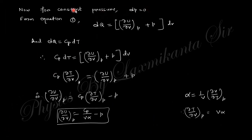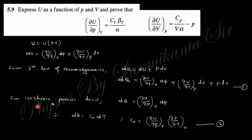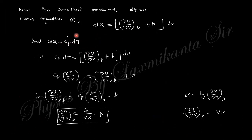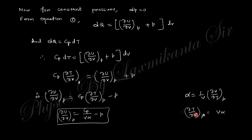For a constant-pressure (isobaric) process, the dV terms are retained and the dp terms drop out. This gives C_p = (∂U/∂V)_p · (∂V/∂T)_p + p·(∂V/∂T)_p. Dividing through by (∂V/∂T)_p at constant pressure, you get (∂U/∂V)_p = C_p·(∂T/∂V)_p − p = C_p/(V·α) − p, completing the derivation of U in terms of measurable quantities.